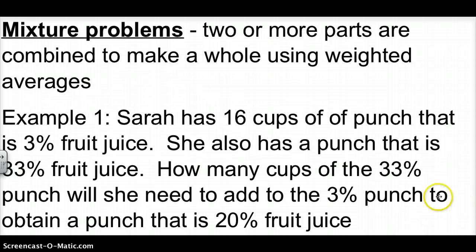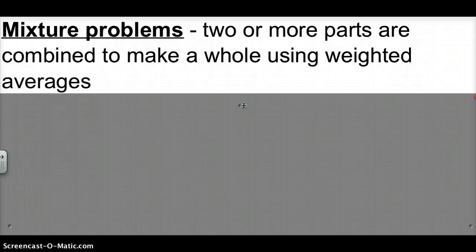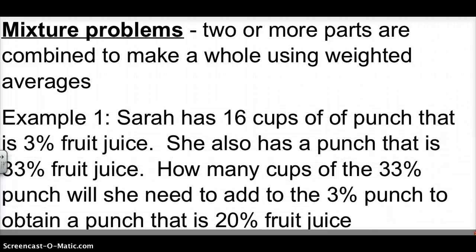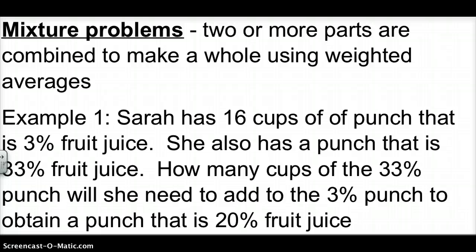A mixture problem is going to have two or more parts that are combined together to make a whole, and it does that using weighted averages. It might tell you we're going to use X percent of this ingredient and a different percentage of another, and we want a total percentage that's a certain amount. Here, Sarah has 16 cups of a punch that's 3% fruit juice, and she also has a punch that is 33% fruit juice. The question is: how many cups of the 33% punch will she need to add to the 3% punch to end up with a punch that is 20% fruit juice?